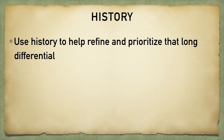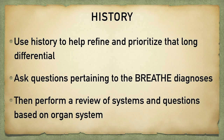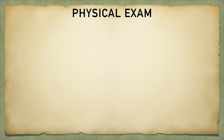First, let the patient communicate all their concerns and symptoms to you. Don't ask too many questions and don't interrupt them. Once they've communicated everything, you can ask more targeted questions. Start with questions that pertain to the BREATHE diagnoses — for example, productive cough with recent fevers may suggest pneumonia, worsening shortness of breath with exertion may suggest ACS, or worsening lower extremity edema in a known CHF patient may suggest heart failure exacerbation. Then broaden out with a review of systems for other organ systems that could be contributing.